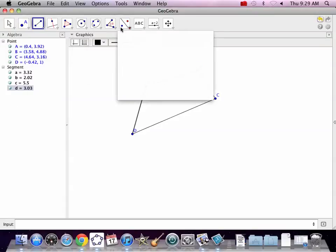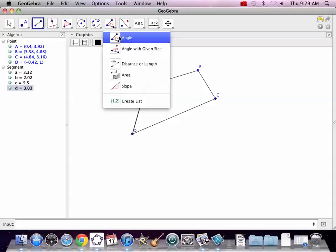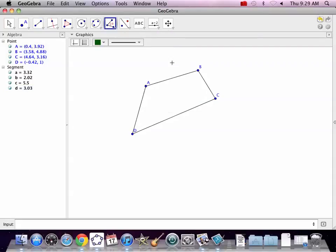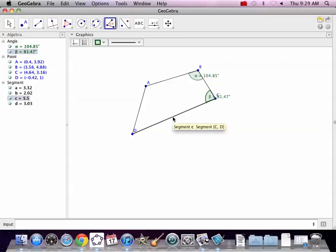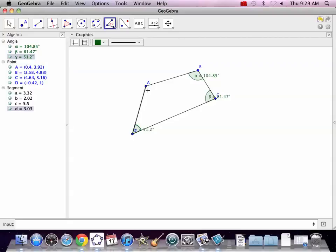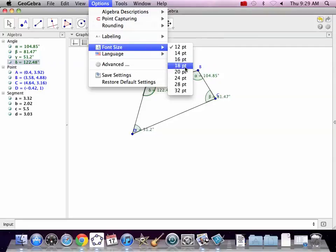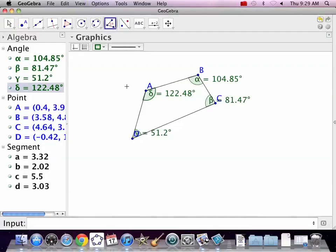We did say that the angles add up to 360, so let's measure these angles. So we measure this angle, angle B, there's a number. Angle C, that says 81 point something. Angle D, 51 point something. And angle A, 122. Let's blow this up a little bit.